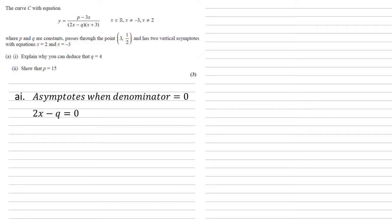So we're going to look at the other bit. We need to set 2x minus q equal to 0. We know the asymptote is that x equals 2, so we're going to put that in, which gives us 4 minus q equals 0, hence q equals 4.